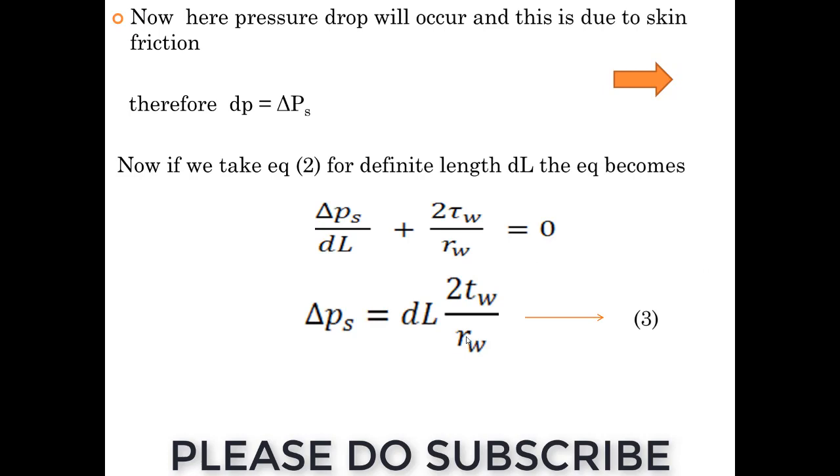dP is nothing but the delta P if it is for the entire length. For small element it is dP, for entire length it is total delta P.